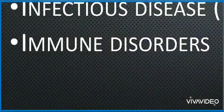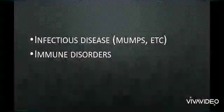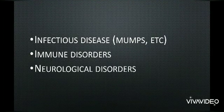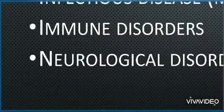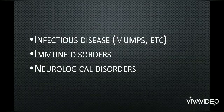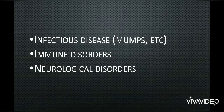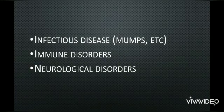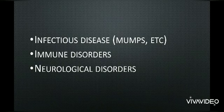Immune disorders can cause auditory neuropathy. Finally, neurological disorders can prevent a person from being able to listen properly, as sound cannot be transmitted from the outer ear to the middle ear, then to the inner ear, and then via the auditory nerve to the brain.